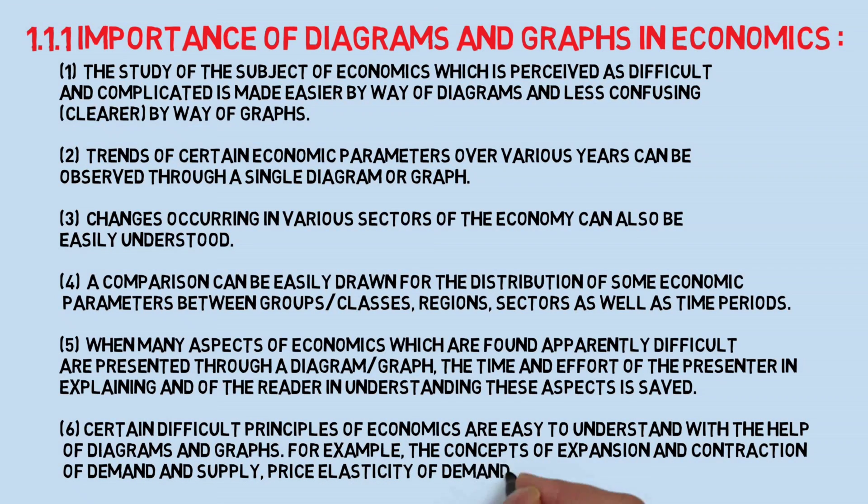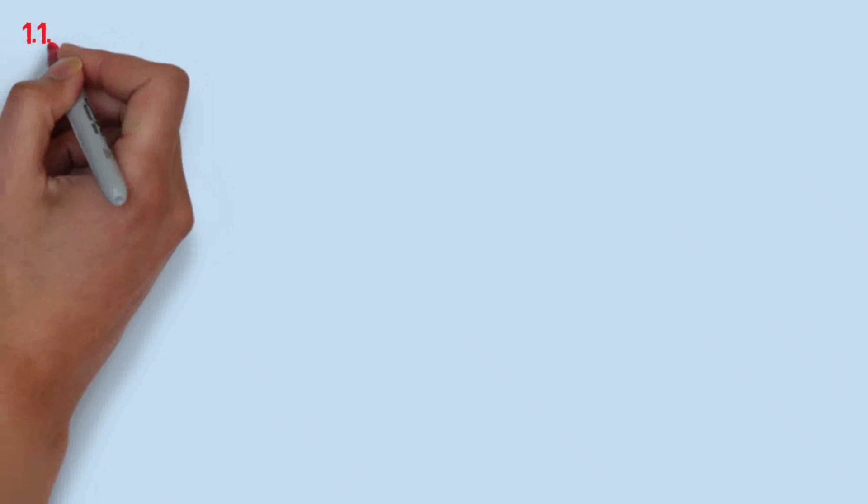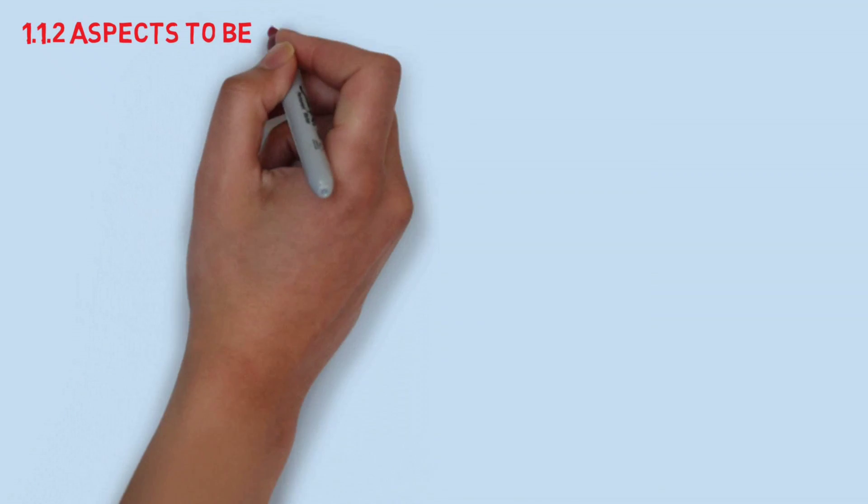So now we will learn about some aspects of diagrams in detail. First of all, we have to keep some points in our mind before drawing a diagram. Number one, the right type of diagram and graph must be chosen for easy understanding and to make it effective.